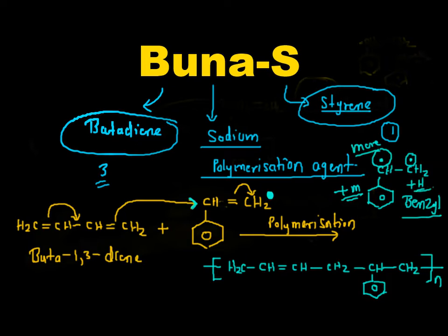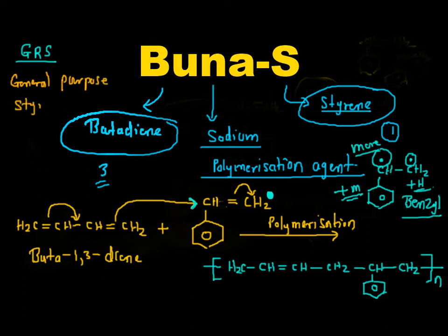This is all about the structure of Buna-S, which is also called GRS — General Purpose Styrene Rubber.